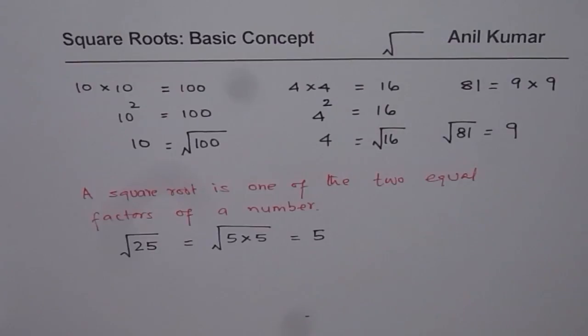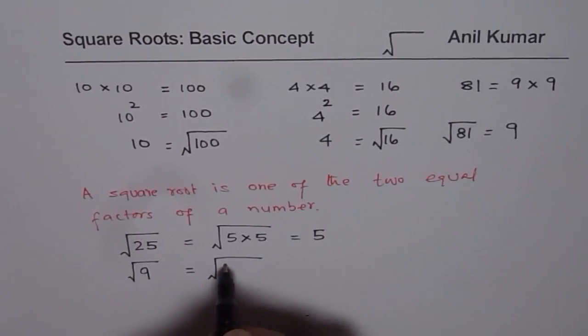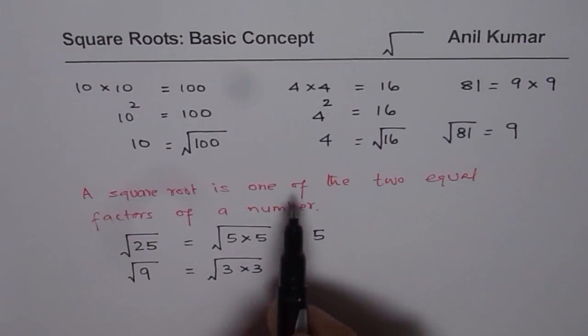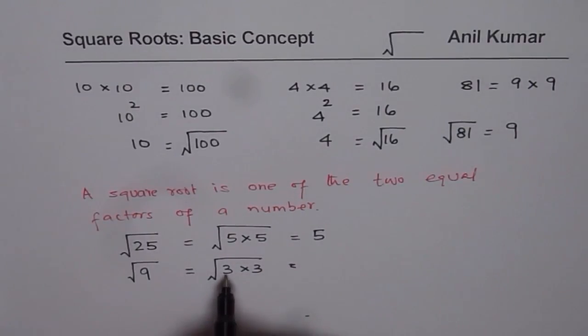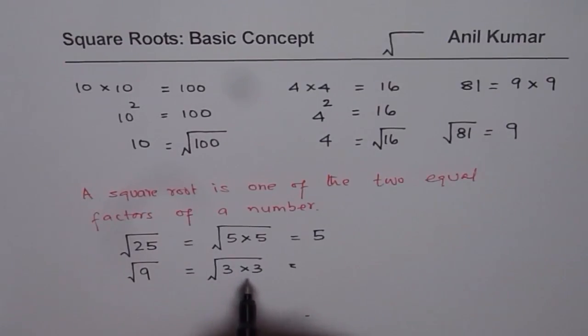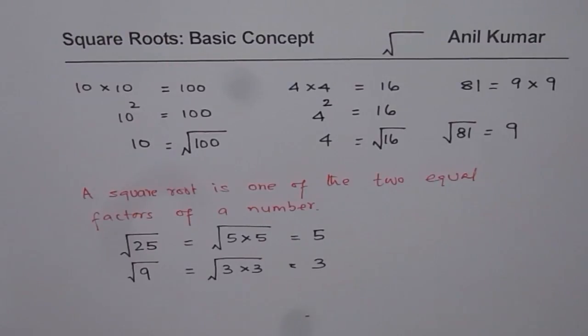So what is square root of 9? Let this be a practice question for you. So you can calculate like this also. Square root, the symbol is like this. Square root of 9. 9 is 3 times 3. So we can write this as 3 times 3. And square root is one of the two equal factors. One of the two equal factors means two equal factors are 3 and 3. So one of the two, that means the number 3. So that is how you find the square root of a number.